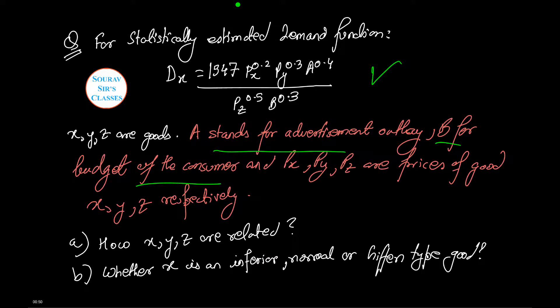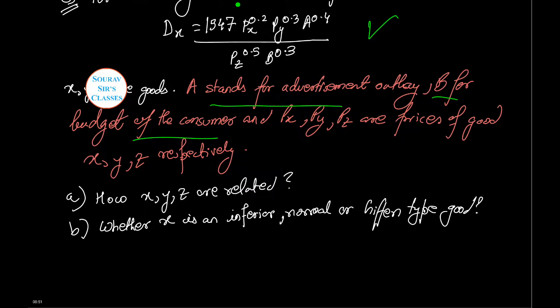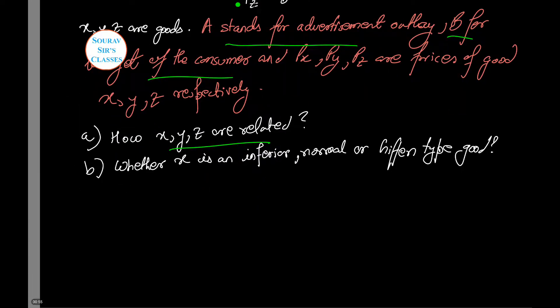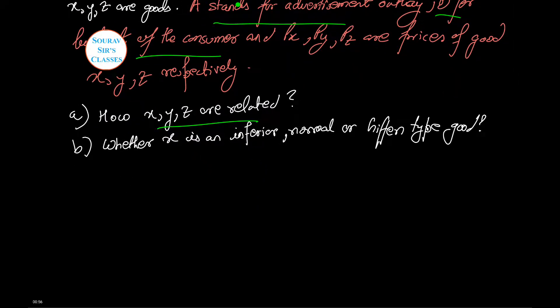Now we need to find how X, Y, and Z are related. In order to find the relation between them, we partially differentiate each time.